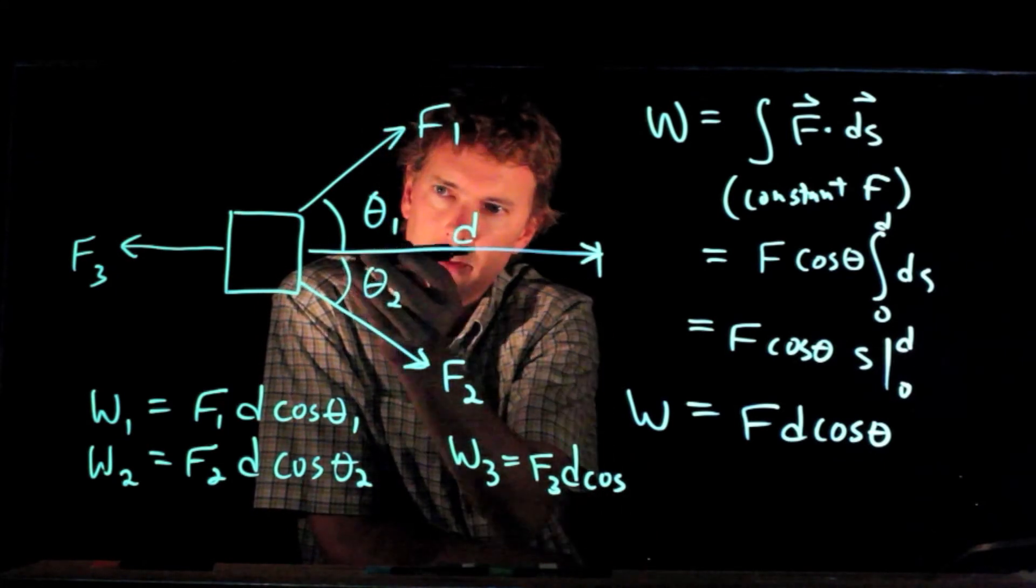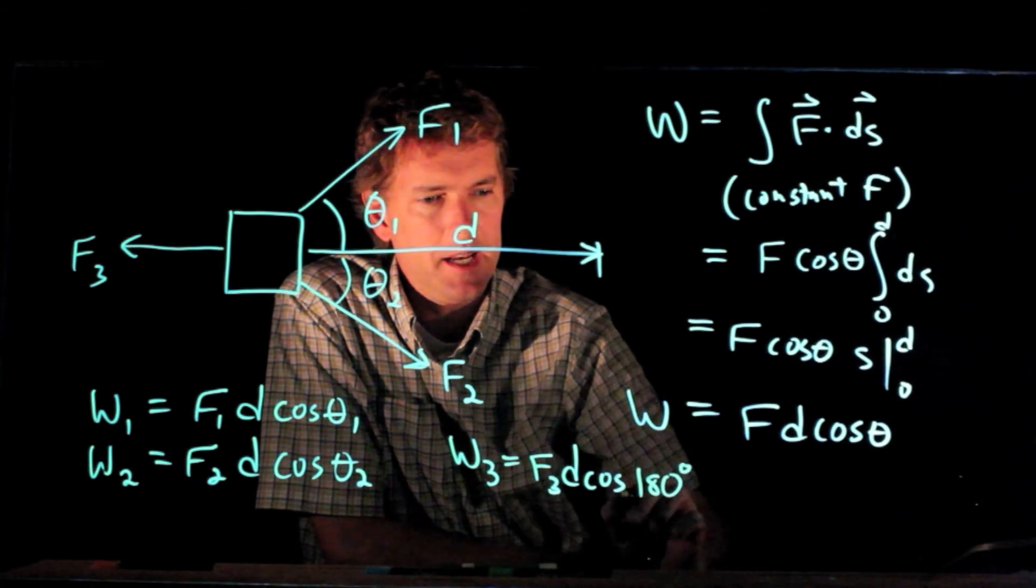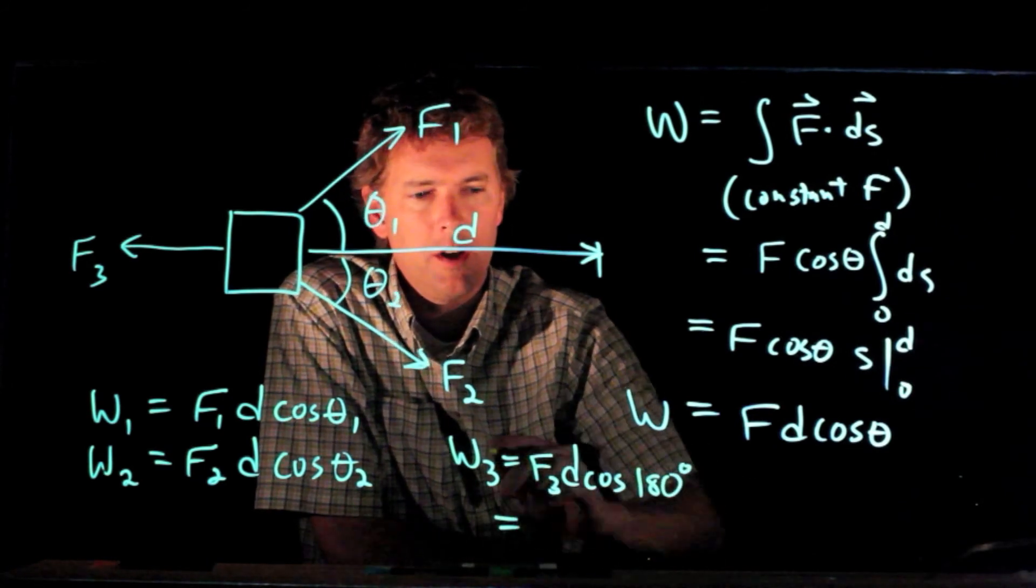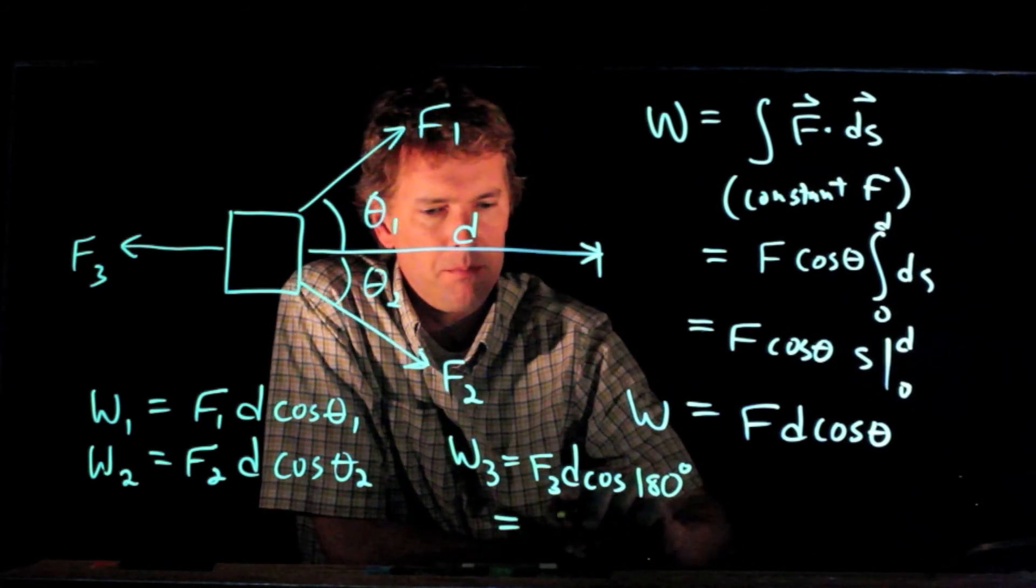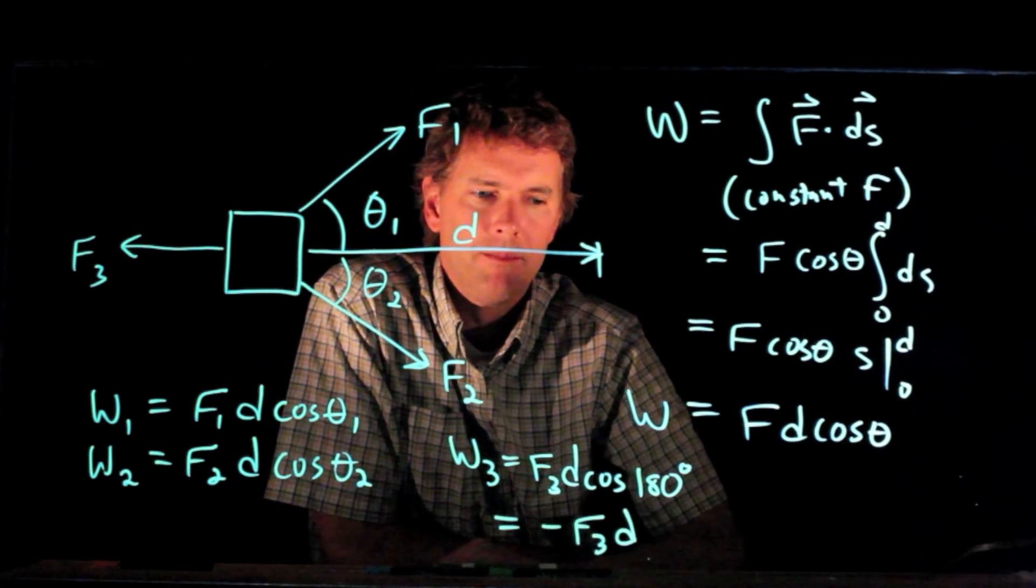The displacement is to the right, the force is to the left, and therefore that angle is 180 degrees. Cosine of 180 degrees is minus 1, and so we just end up with minus F3d.